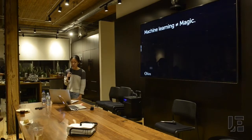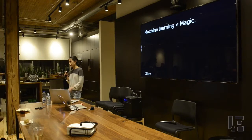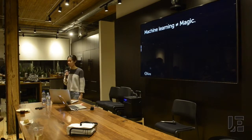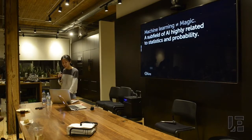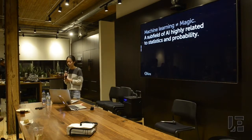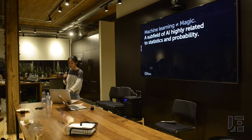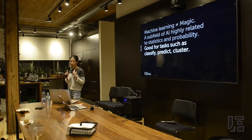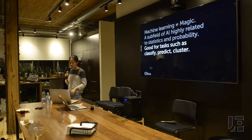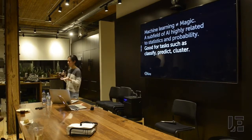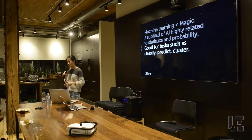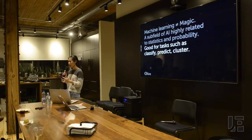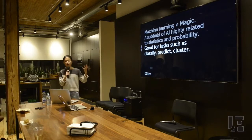A little bit about machine learning, since that's the technology we get to work with. First of all, it's not magic. It is a sub-field of artificial intelligence which is highly related to statistics and probability. It's very good for tasks such as classifying things, predicting things, and clustering things. Think about a lot of the products you use every day like Spotify, Amazon, and Google — a lot of these things actually use different kinds of algorithms to accomplish some of these tasks.